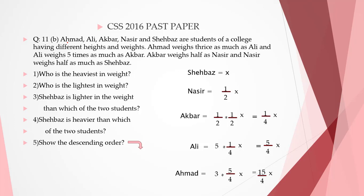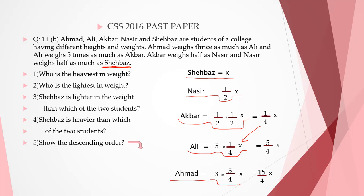This question is similar to the previous one. Ahmed, Ali, Akbar, Nasir, and Shehbaz are students of a college having different heights and weights. Ahmed weighs thrice as much as Ali, and Ali weighs five times as much as Akbar. Akbar weighs half as much as Nasir, and Nasir weighs half as much as Shehbaz. We'll again start from the end — let X be Shehbaz's weight. Nasir is half of X, Akbar is half of Nasir, Ali is five times Akbar, and Ahmed is thrice Ali. Assume X equals 8, plug in and solve.